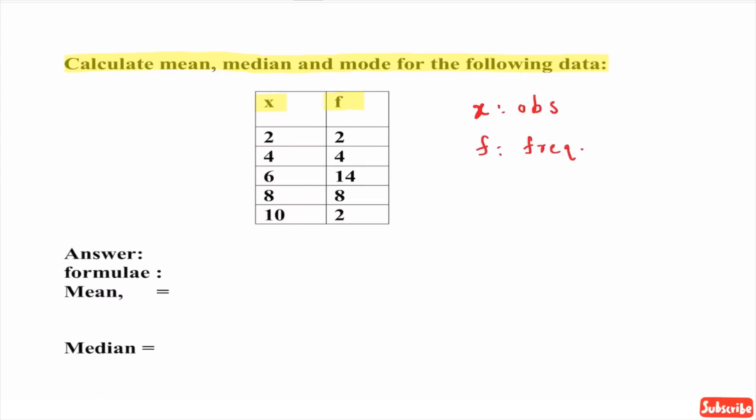Let us write the formulae which we will be using to calculate mean, median, and mode. Mean is given by summation fx upon summation f. Notation that we will be using for sum f is capital N.